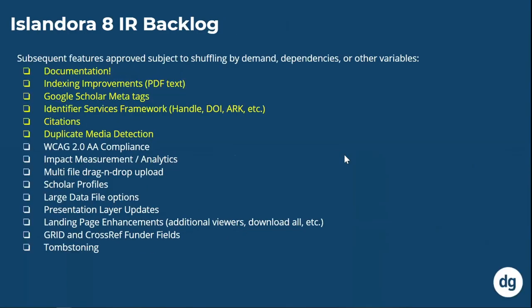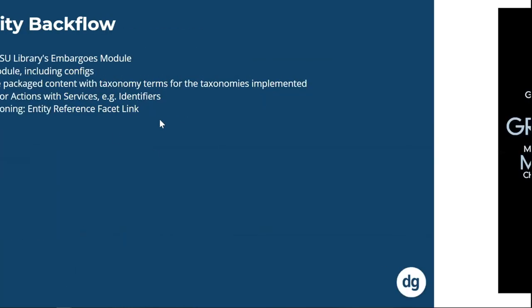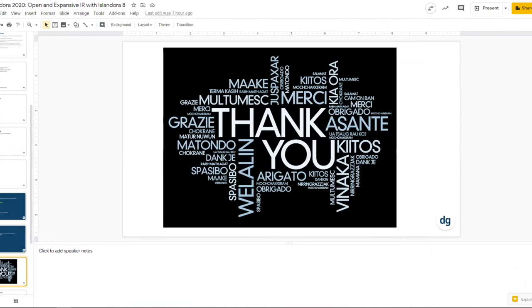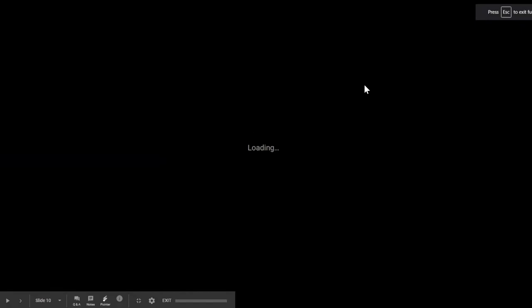I'm going to scroll quickly to where we are on the backlog. Everything highlighted here is in active development. We've got documentation — which always lags behind the release — indexing improvements where we're going to index the text in PDFs attached to research outputs so they come back in search results, Google Scholar meta tags, and an identifier framework. We've also got work happening on citations and duplicate media detection — all active. The rest of the features below are roughly in sequence and planned, though early adopters will have a say on which features get prioritized.